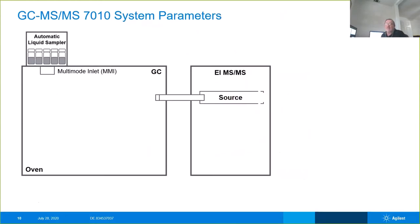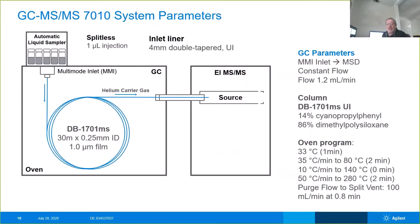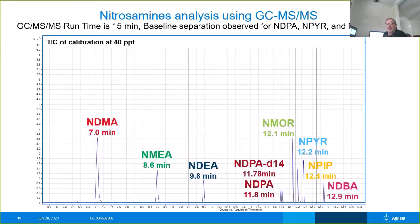With the GC-MS 7010 system, one of the advantages you'll see right away is that we can make a 1-microliter injection versus a 10-microliter injection. We also used a 4-millimeter double tapered liner with a DB-1701, 30-meter, 0.25, 1-micron film thickness column, run into the MS-MS system. Our total runtime is only 15 minutes versus 40 minutes, which almost triples the capacity of your laboratory. We were able to run the same class of compounds at the 40 PPT level and resolve everything to baseline separation. Our last compound of interest eluted at 12.9 minutes, so we could have had a run under 13 minutes, but we chose to extend it to 15.